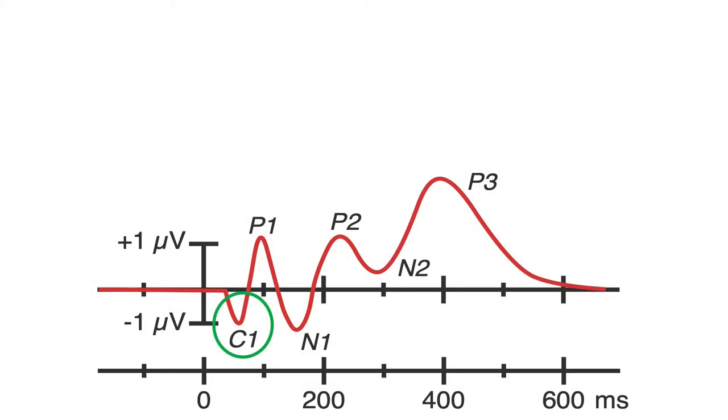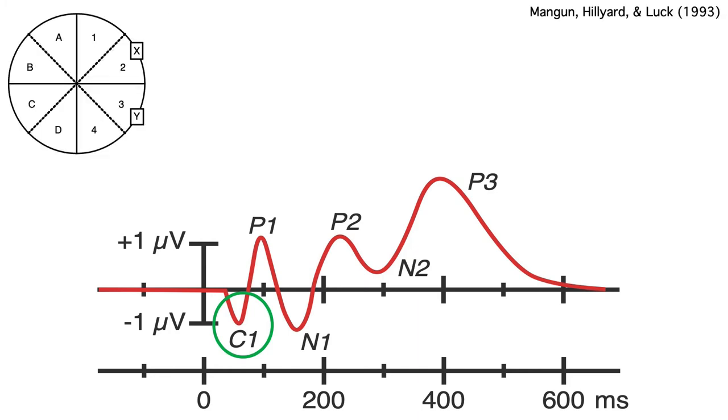We don't even use p or n for the very first visual response, which comes from primary visual cortex. We call this response c1 because it can be either positive or negative depending on whether the stimulus is presented above or below the point of fixation.